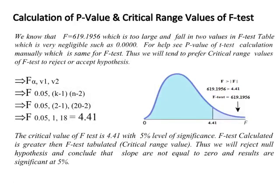For the F-test P-value and critical range: the F-test value of 619.1956 is very large, making the P-value negligible. We prefer using the critical value to reject or accept the hypothesis. The critical value of F at 5% significance with degrees of freedom V1 = 1 and V2 = 18 is 4.41 from the F-distribution table.